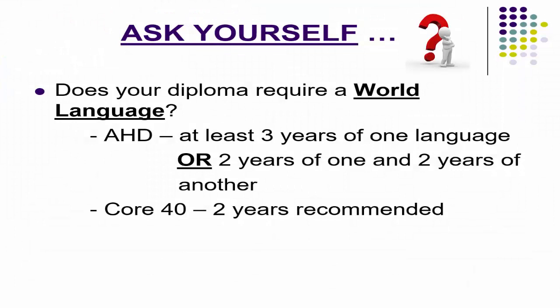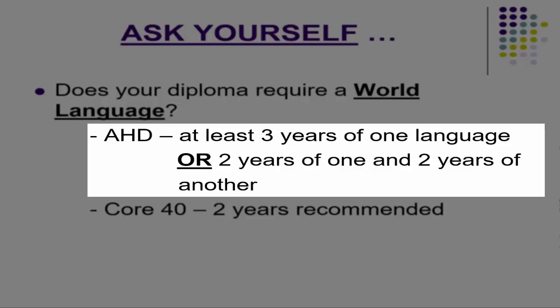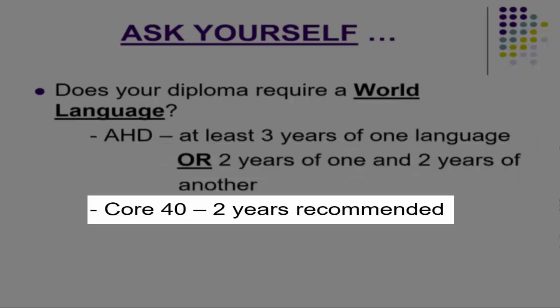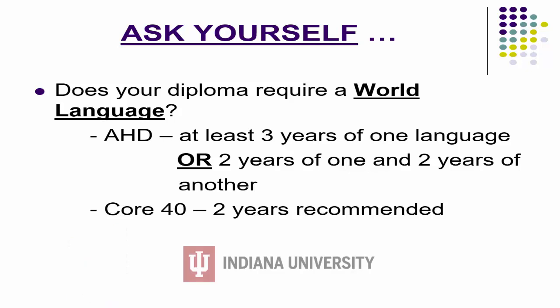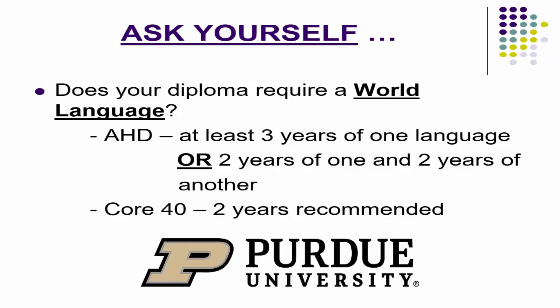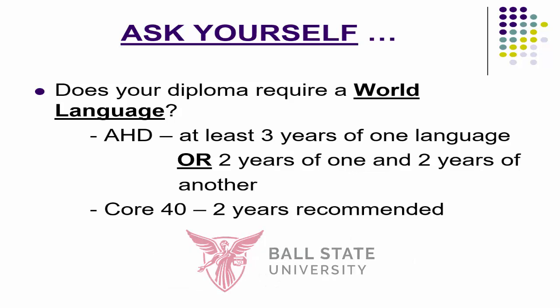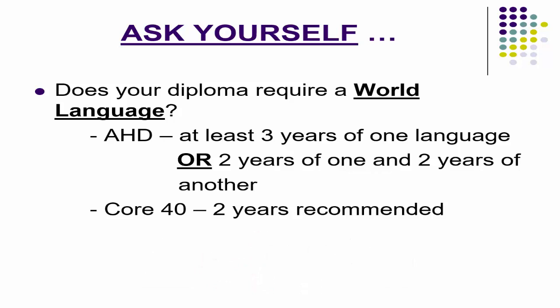Please ask yourself: does your diploma require a world language? Academic Honors requires three years of one language, or two years of a language such as Japanese and two years of another such as Spanish. Core 40 does not require foreign language, though two years is recommended. Keep in mind, Purdue Fort Wayne does not require foreign language. IU Bloomington requires two years of high school foreign language. Purdue West Lafayette requires two years. Ball State does not. So you've got to do your research.